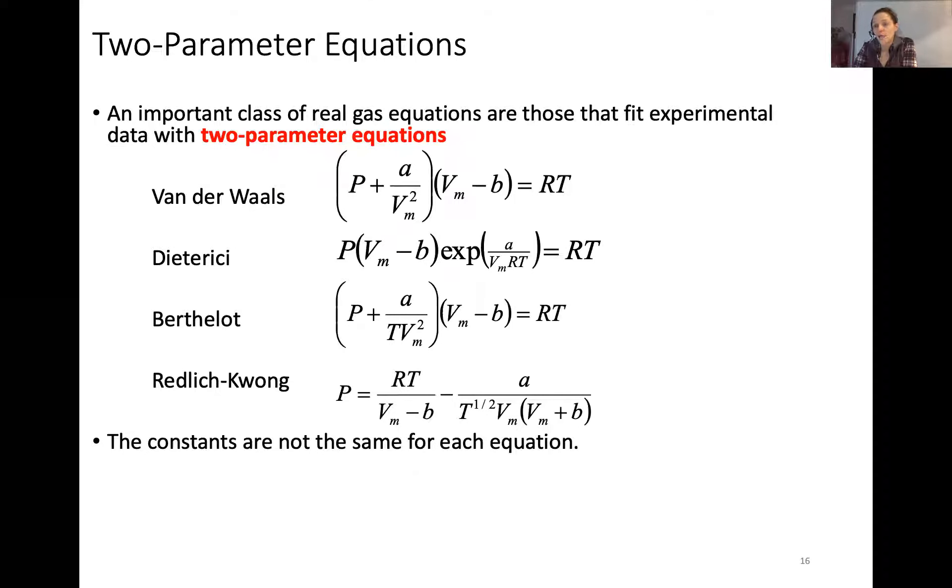Another way is a two parameter system, when you try and put physical meaning to these fitting parameters. The most notorious one you've seen before is the Van der Waals equation. There's also the Dieterici equation, Berthelot equation, Redlich-Kwong equation. All of them have pressure times some sort of volume equals RT, but then there's a bunch of extra trailing stuff. And notice the constants aren't the same in each of the equations.